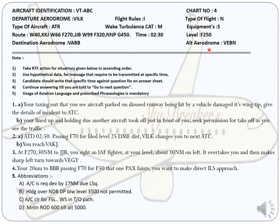The cruising flight level is 250 and the alternate aerodrome is Varanasi. On Whiskey 40 you will fly at Flight Level 250. Once you reach Kajirao and fly Whiskey 66, you need to climb to Flight Level 270. When flying Whiskey 99 past Jabalpur, you climb again to Flight Level 320. From Nagpur heading towards Mumbai on Golf 450, you descend back to Flight Level 250.